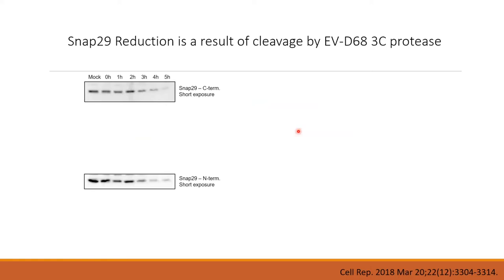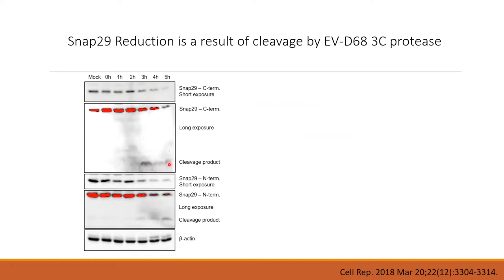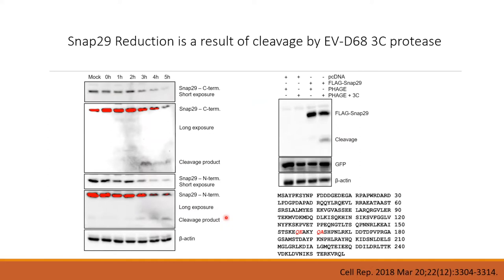The first thing we found was that when we looked at SNAP29 during an EVD68 infection, the protein seemed to be going away — it was just disappearing. When we did longer exposures we could actually find cleavage products of this protein, as if it was being cleaved and then degraded. Using antibodies to both the N- and C-terminus, we could map where this cleavage was occurring based on the size of transient cleavage products.